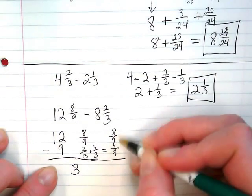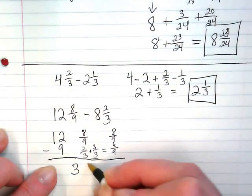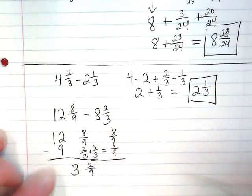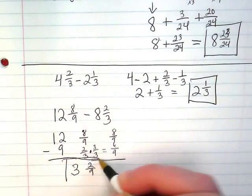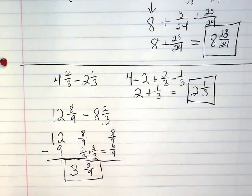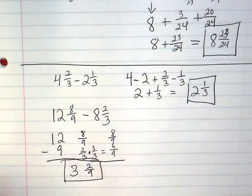Reduce the fractions, 8 minus 6 is 2 over 9. Just a different way to write it. It could also work with the addition problems where you could line them up.